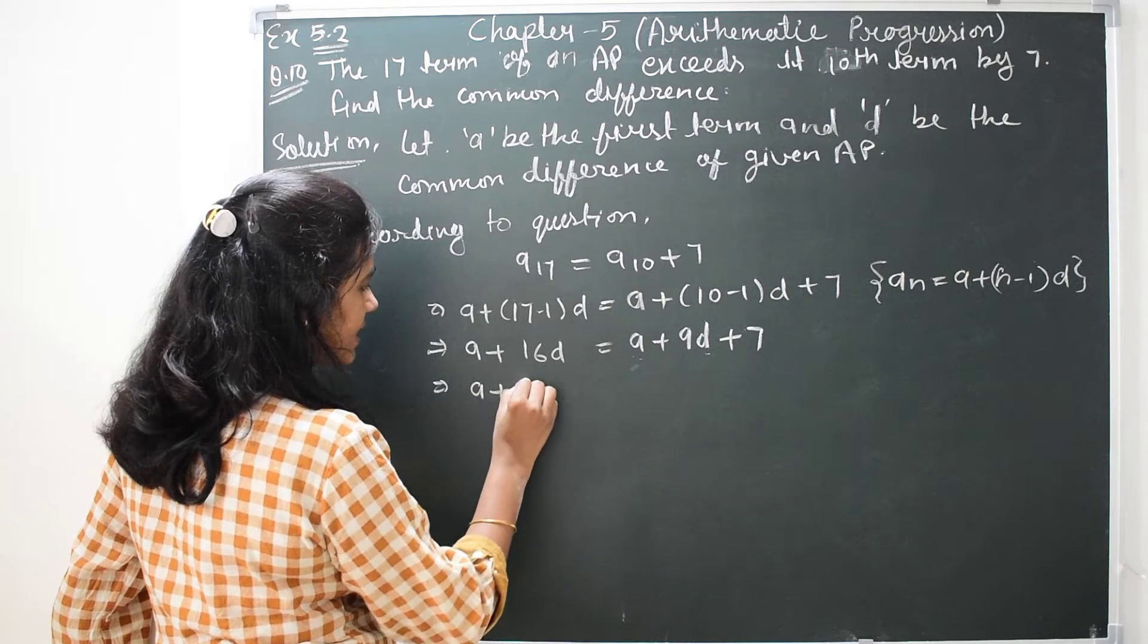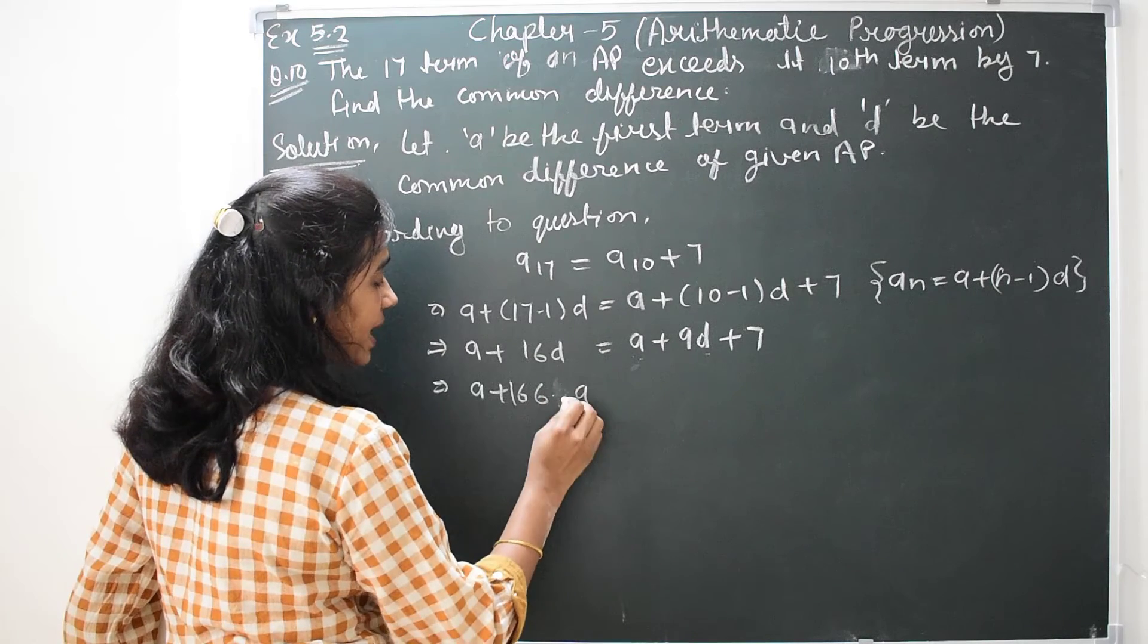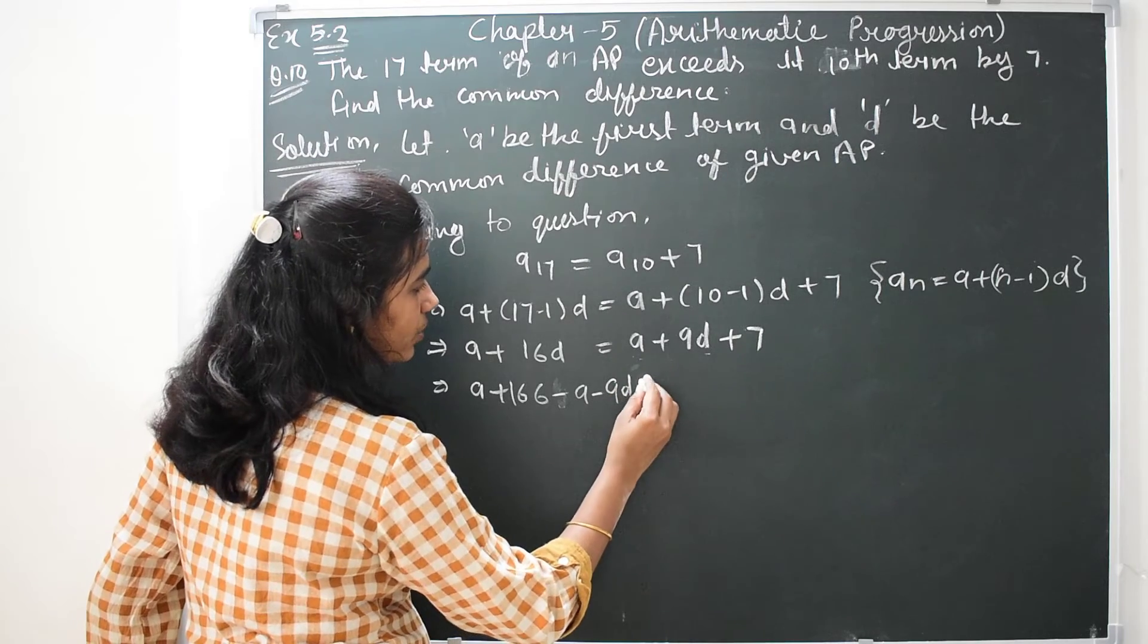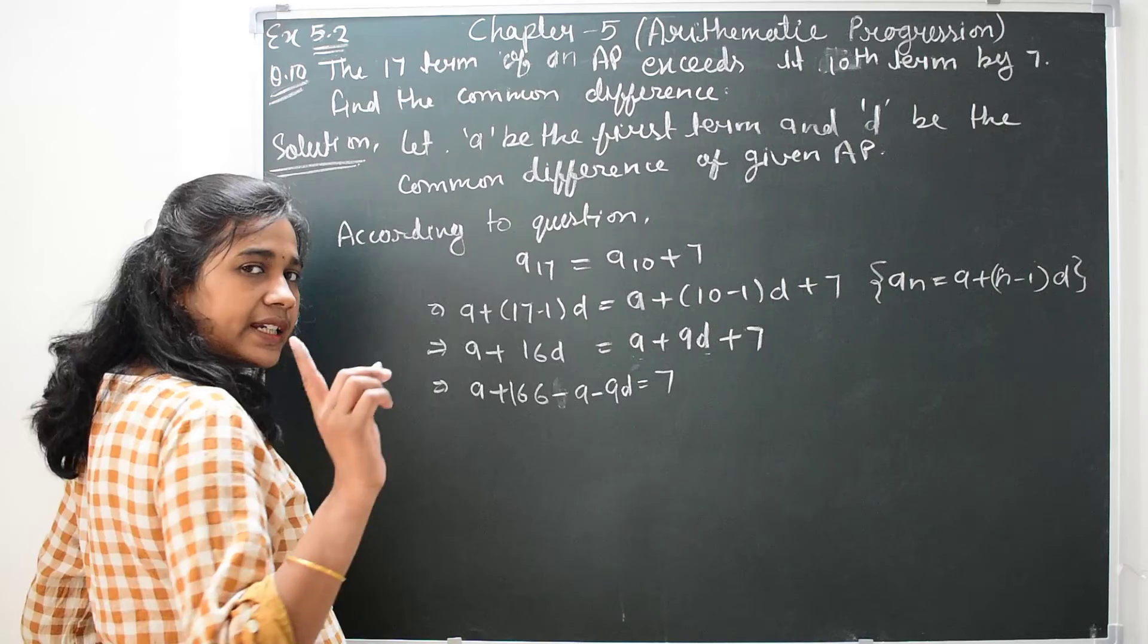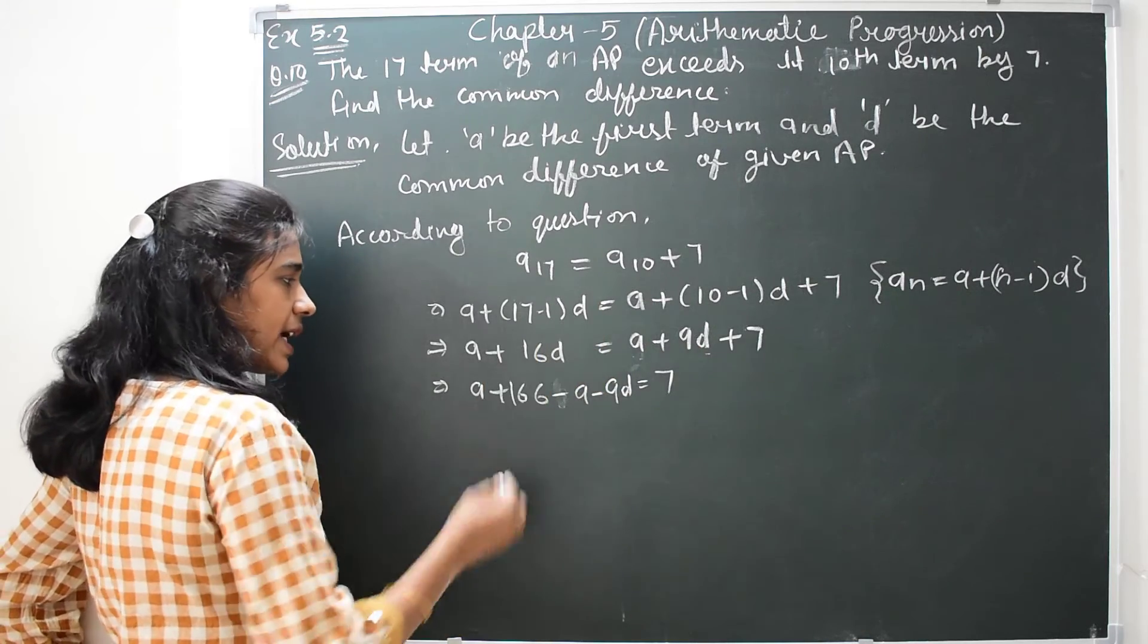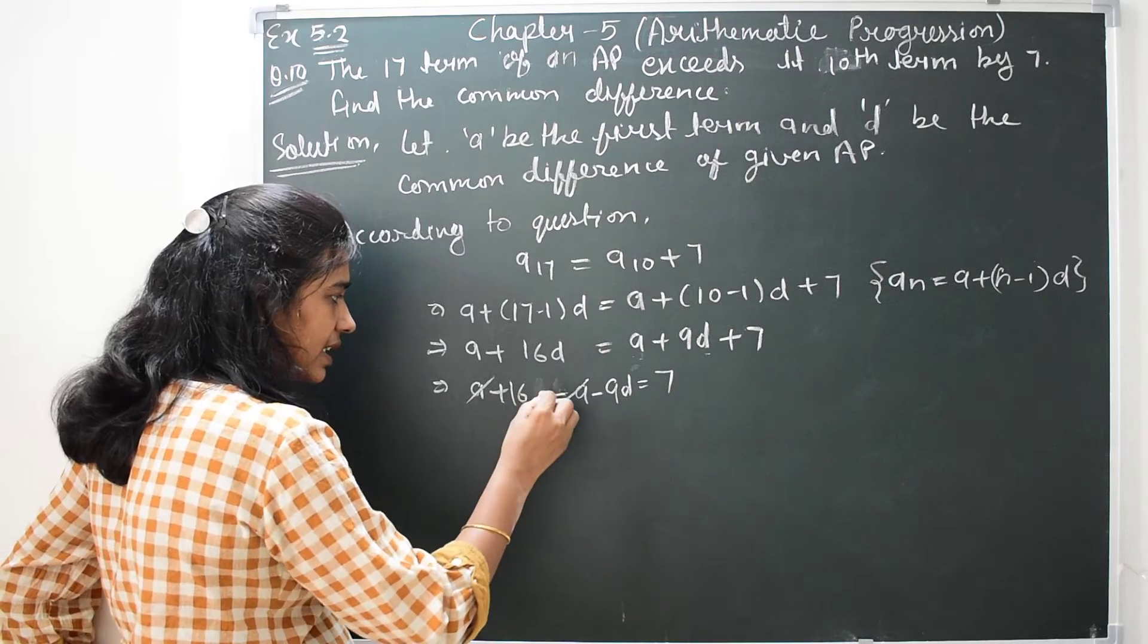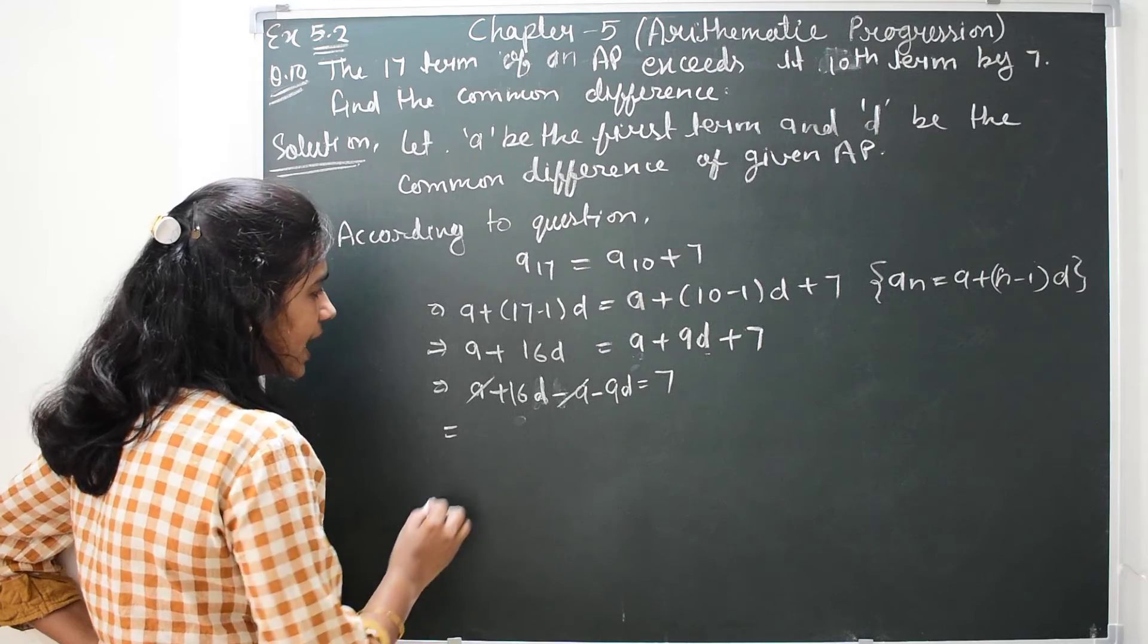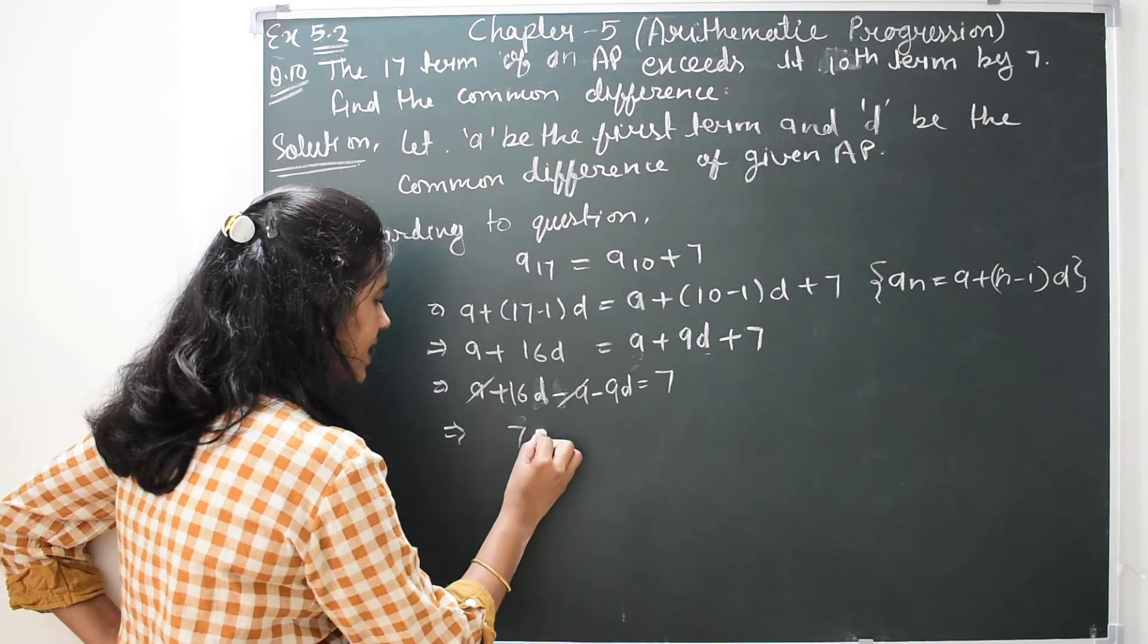Transferring A and 9D to the other side, A cancels out. 16D minus 9D equals 7D. That will be 7D.